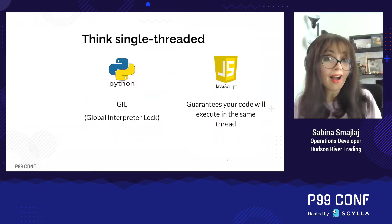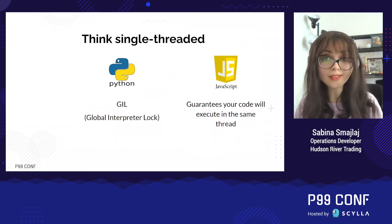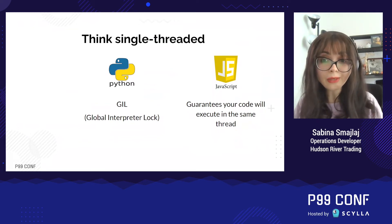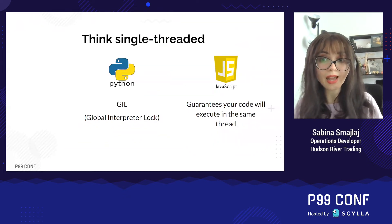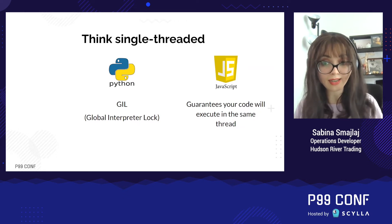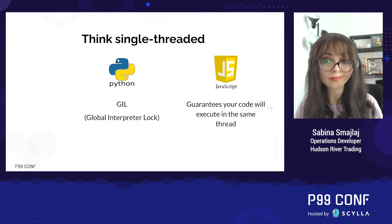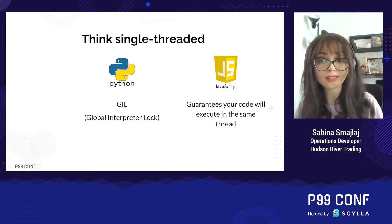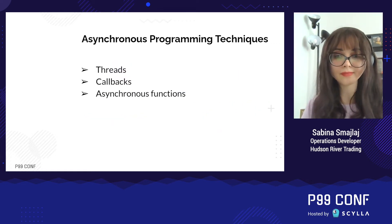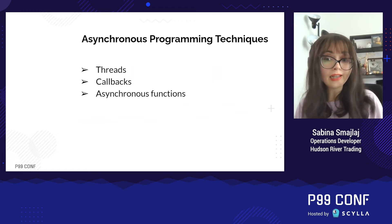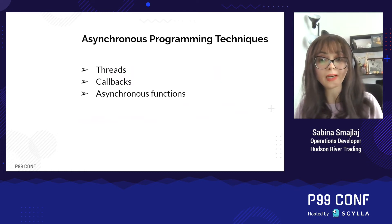We now have a high-level concept of what async is and how it could be useful to us. The languages that we are going to be discussing today, Python and JavaScript, can be thought to behave like single-threaded languages. Python has the GIL and JavaScript guarantees that your code will always execute in the same thread. So the techniques that we will discuss will assume that we are limited to a single processor. Let's now start looking into the inner workings of asynchronous programming to see how we can use it to speed up our code.